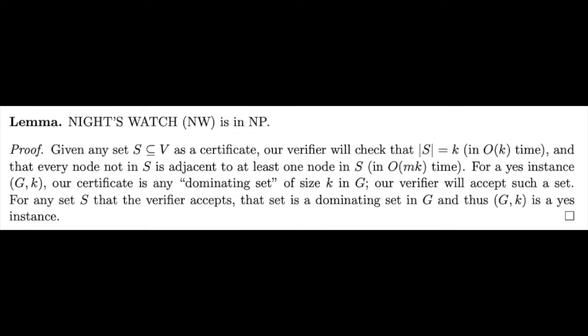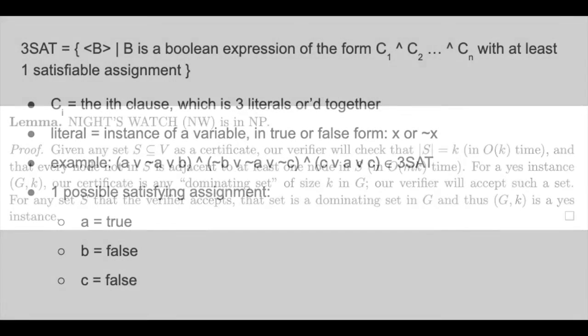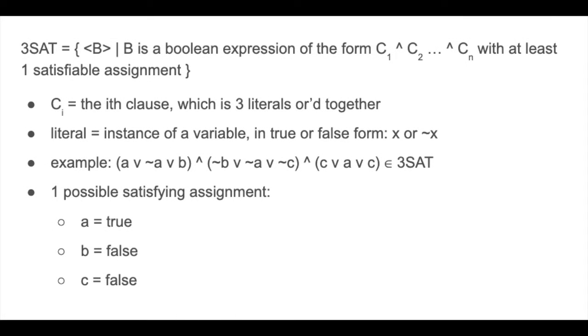Recall that a graph has a dominating set of size k if every vertex is either in the dominating set or is adjacent to a vertex in the dominating set. Knight's Watch, which is actually dominating set, is in NP because you can construct a verifier that takes in a subset of V as a certificate, checks that the certificate is of size less than or equal to k, and that each vertex is in the set or is adjacent to a vertex in the set. This runs in polynomial time, so it is verifiable in polynomial time.